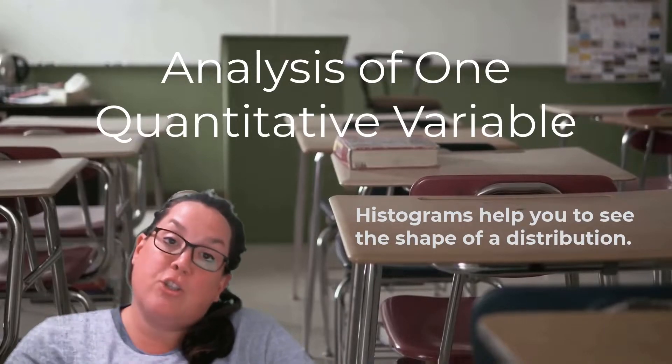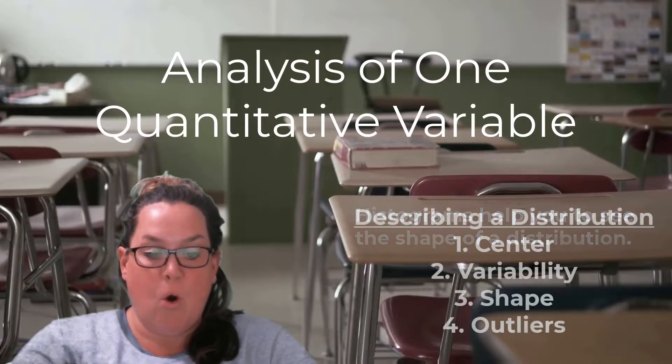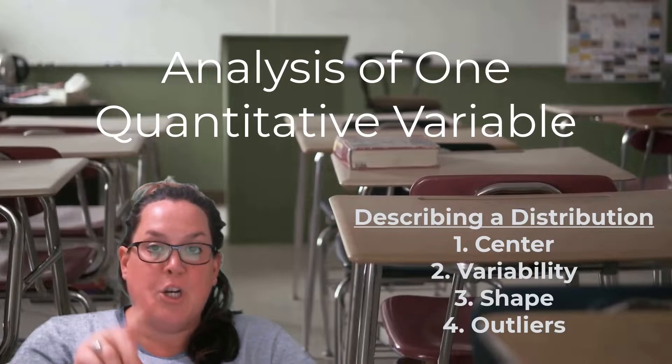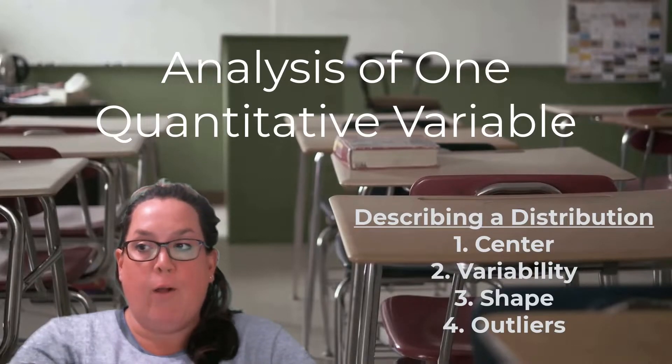And then we discussed how to actually describe a distribution. So remember there were four areas to talk about: the center, the variability, the shape, and then outliers.